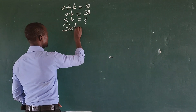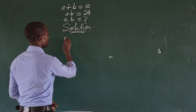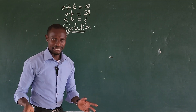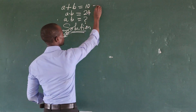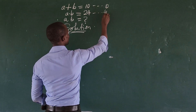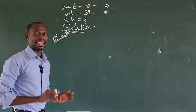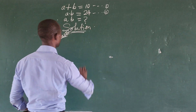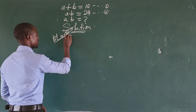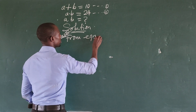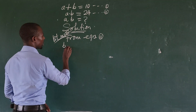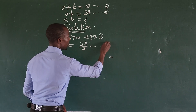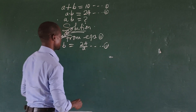So we're going to use the first method, which uses substitution. In the first method, we have this as equation one and this as equation two. From equation two, we can make a or b the subject of the formula. Because we want to get the first variable a, we want to make b the subject of the formula in equation two. So from equation two, b is equal to 24 all over a — let's call this equation three.